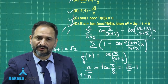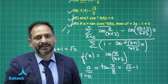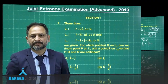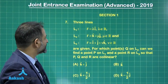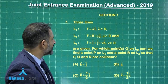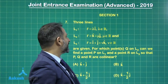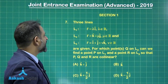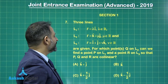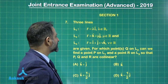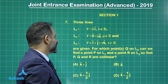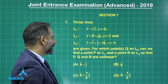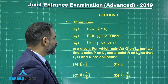This is an easier one for the JEE Advanced. Now, the next problem is from three-dimensional geometry. There are three lines which are given: the first line is λî, the second line is k̂ + μĵ, and the third line is î + ĵ + νk̂.